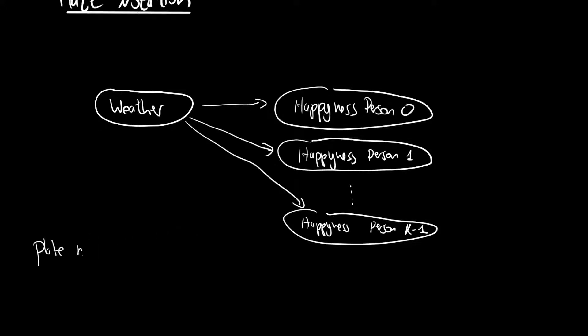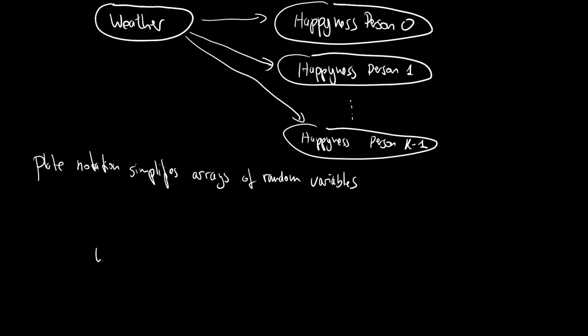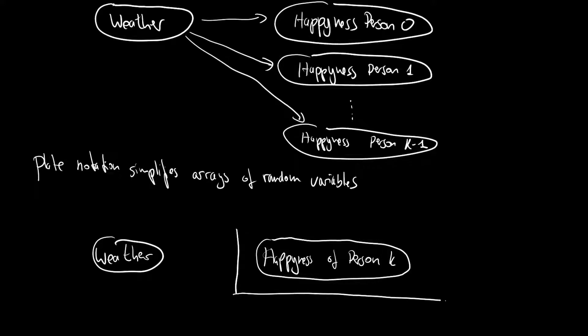So plate notation simplifies arrays of random variables. And this will look like the following. So again, we have one weather. And then we say we have the happiness of person small k. And then we draw a rectangle around this. And in the bottom right corner, we put a k, in order to signal we repeat this k times.